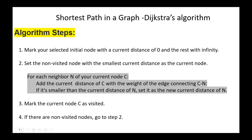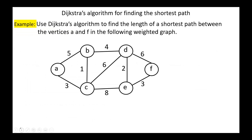I will demonstrate these steps through an example. Use Dijkstra's algorithm to find the length of the shortest path between vertices A and F in the following weighted graph. First, we set the distance of the source vertex A to zero and the distance of other vertices to infinity. We start the updating or relaxation process for vertex A. A is connected to B; the distance is 5. Zero plus 5 equals 5. Since 5 is less than infinity, we update this value to 5. In the same manner, 0 plus 3 to C equals 3; 3 is less than infinity, so we update this value to 3.